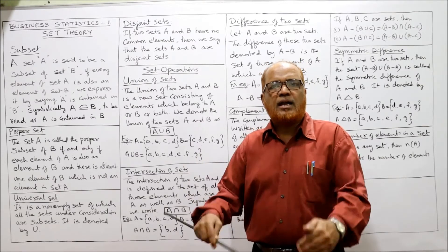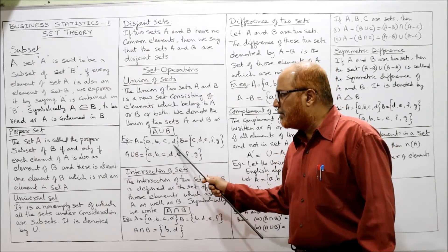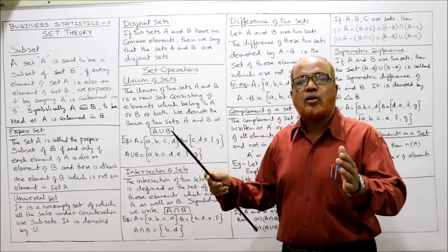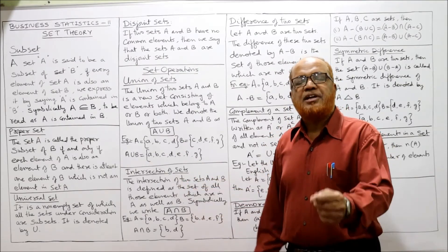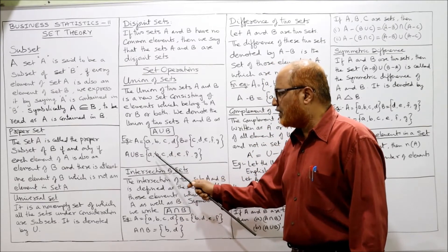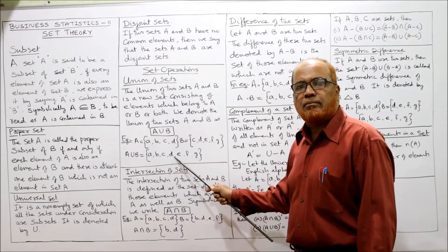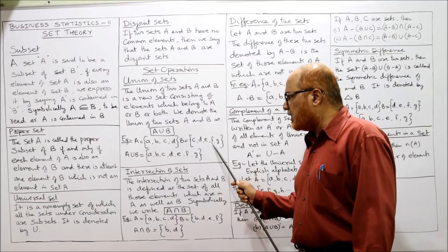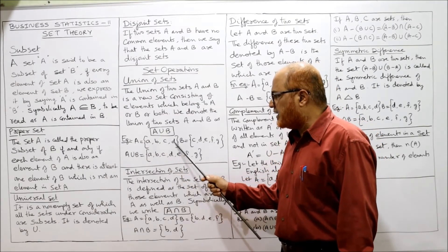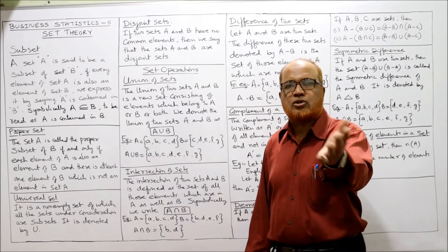Example for union: if set A = {A, B, C, D} and set B = {C, D, E, F, G}, then A union B takes all elements of A and all elements of B. We take A, B, C, D from set A. C and D are already taken, so we don't repeat them. We then take E, F, G from set B. So A union B = {A, B, C, D, E, F, G}.